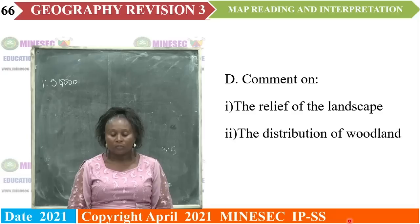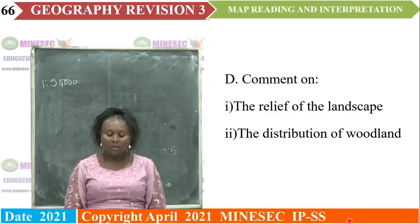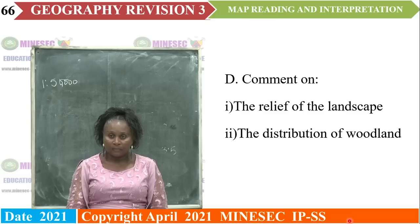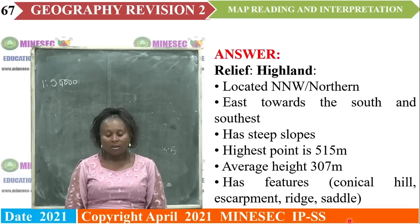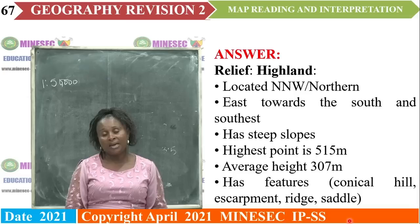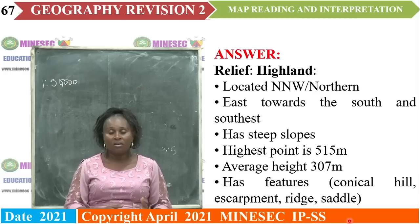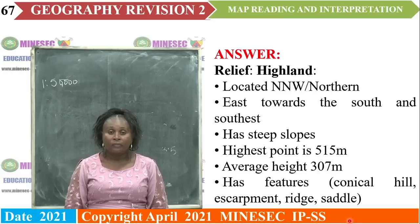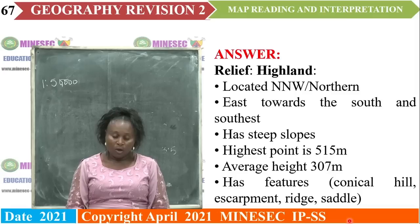(D) Comment on the relief of the landscape. Remember, relief is the nature of the land — is it high, is it low? When you identify the regions — highland and lowland — you can then describe by locating the area where the highland is found.